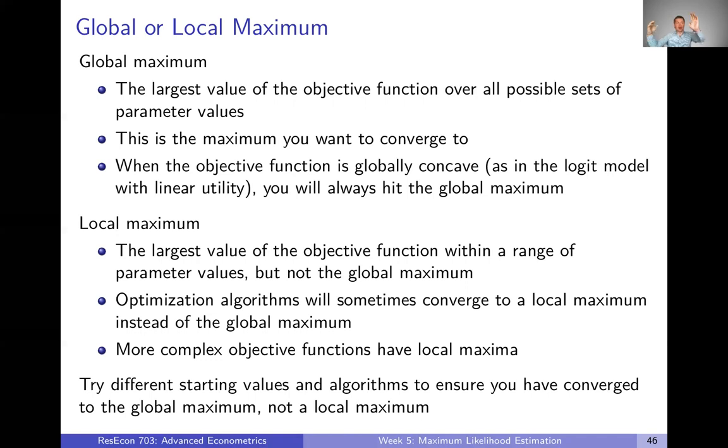Your algorithm will always take you to the global maximum, no matter what. But the global maximum contrasts with the local maximum. The local maximum is the largest value of the objective function within some local range of parameters, but it's not the global maximum.